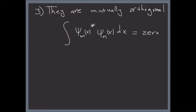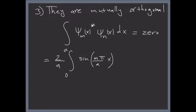Let's try to prove that, because it's going to show up throughout the entire course. Our psi function gives us: we integrate from zero to a of (2/a) times sine of m pi over a times x, times sine of n pi over a times x dx. This integral should be equal to zero. Let's see if it is.